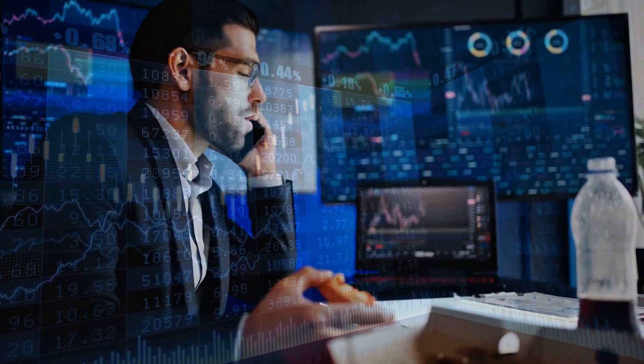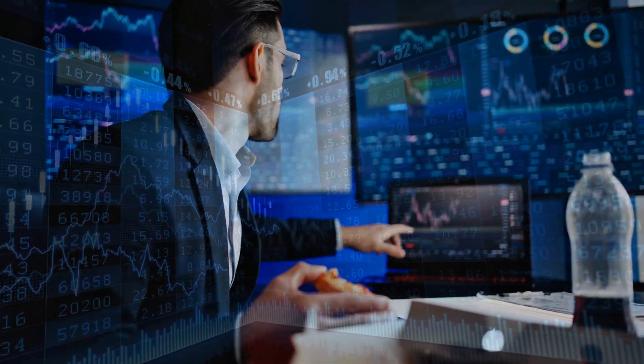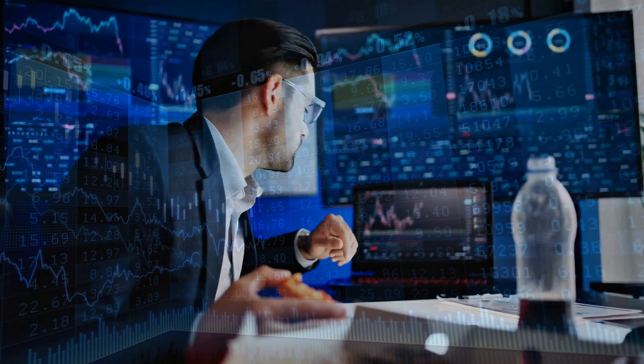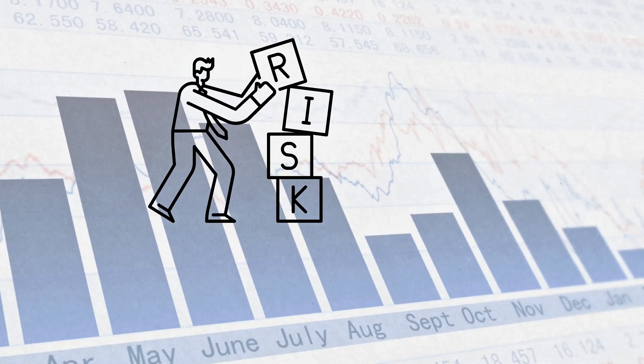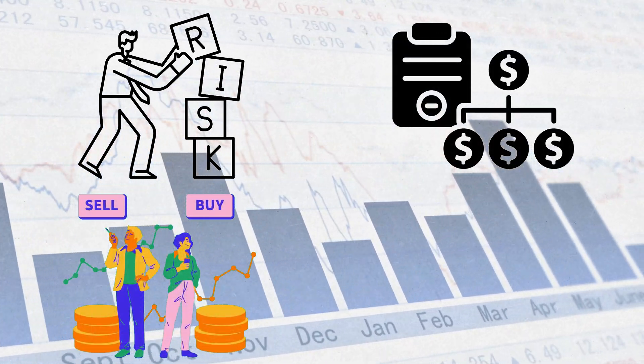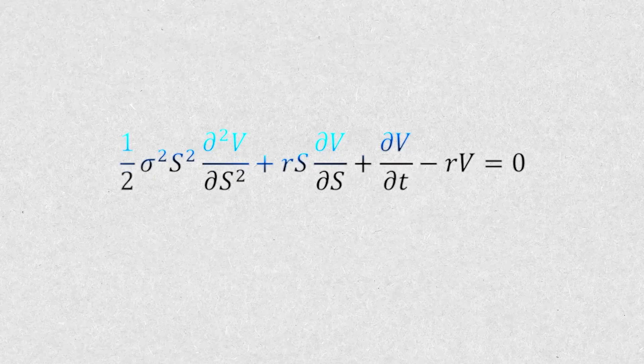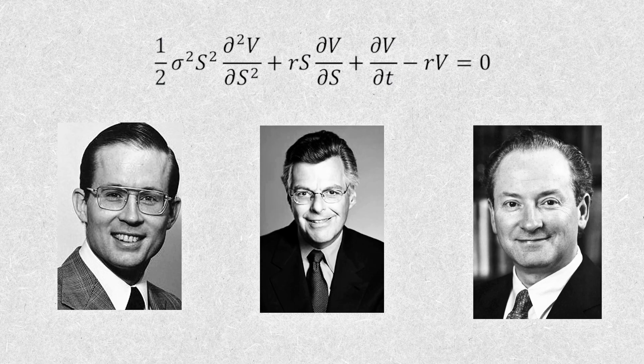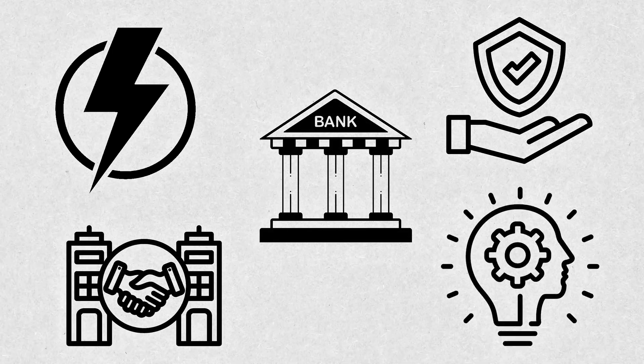So while the ebb and flow of market forces may appear chaotic, the Black-Scholes model and principles of financial mathematics have injected vital structure into this complex system. They enable calculated risk-taking, rational pricing of derivatives, informed dynamic trading strategies, and optimized decision-making under uncertainty. An indispensable innovation that has transcended its stock market origins to reshape business logic across industries spanning energy, insurance, banking, corporate finance, and beyond.